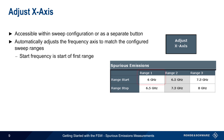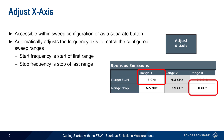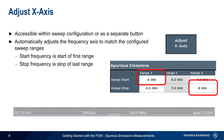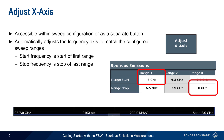In other words, the start frequency will be the start frequency of the first range, and the stop frequency will be the stop frequency of the last range. In this example, pressing Adjust X-axis will cause the span to start at 6 GHz and stop at 8 GHz, which corresponds to a center frequency of 7 GHz and a span of 2 GHz.